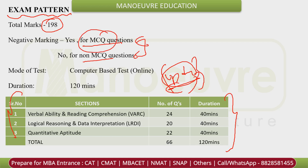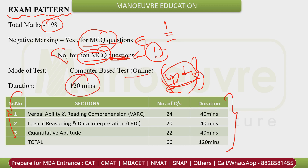MCQ: one question with four options. Non-MCQ: one question with no options — there is no negative marking for non-MCQ. The exam is on computer. VARC has 24 questions in 40 minutes, LRDI has 20 questions in 40 minutes, and QUANT has 22 questions in 40 minutes — overall 66 questions in 120 minutes.